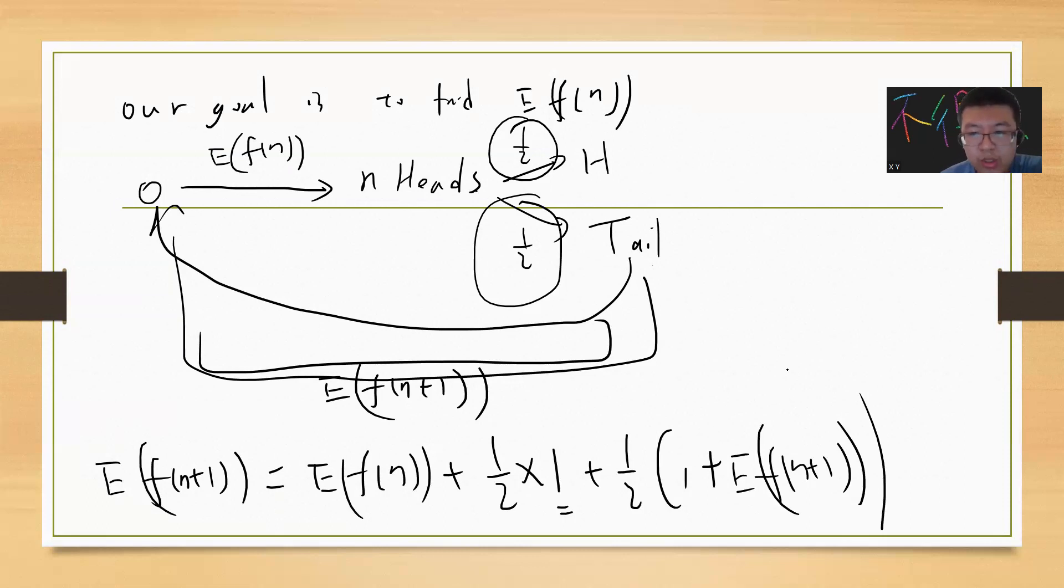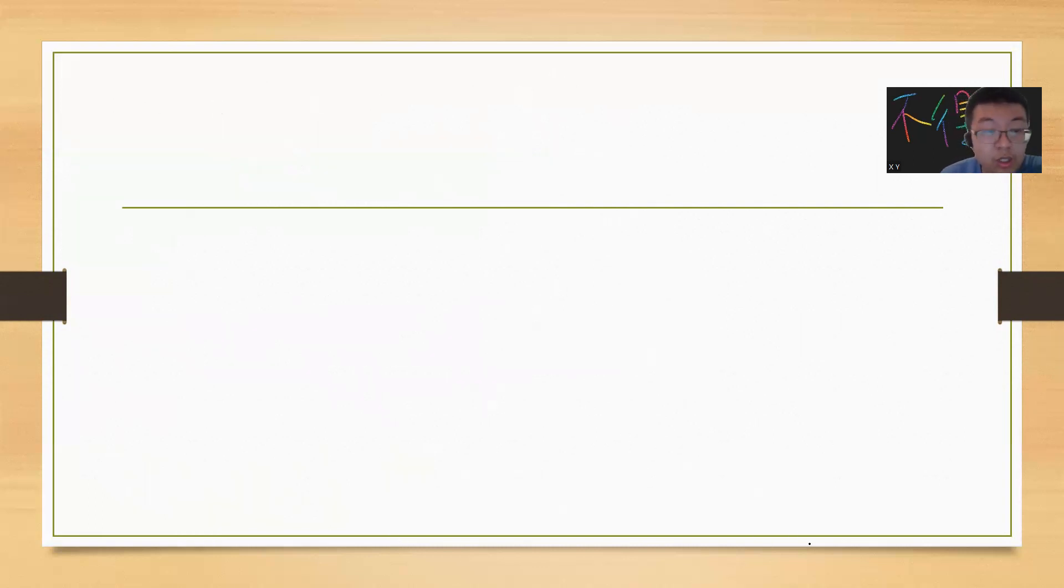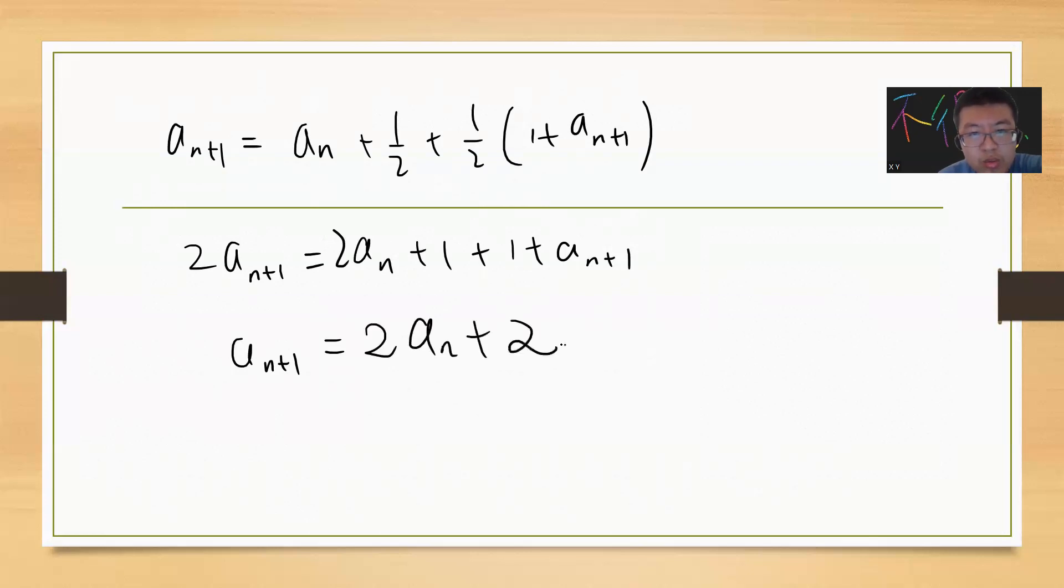Let's make the notation simpler. Let's call this a_{n+1} and call the other one a_n. So a_{n+1} = a_n + 1/2 + 1/2(1 + a_{n+1}). We get 2a_{n+1} = 2a_n + 2, so a_{n+1} = 2a_n + 2. Since a_1 = 2, we have a_2 = 2×2 + 2 = 6, and a_3 = 2×6 + 2 = 14. These are common answers.